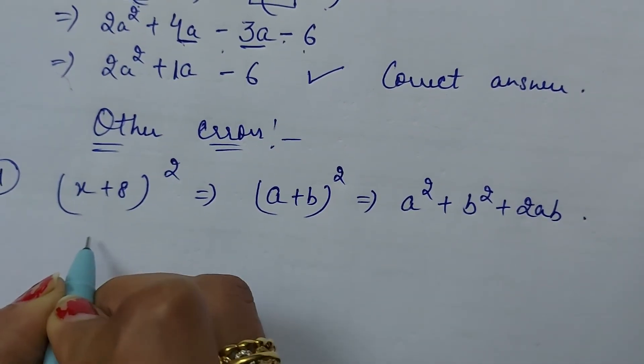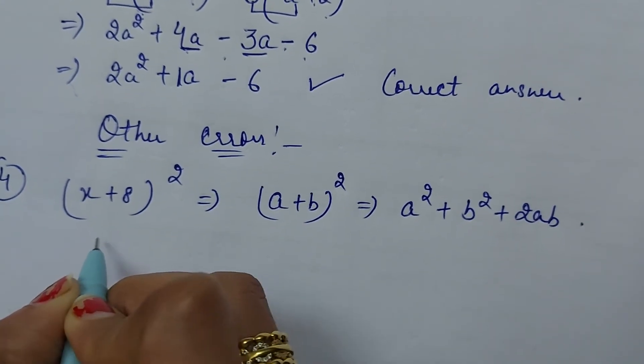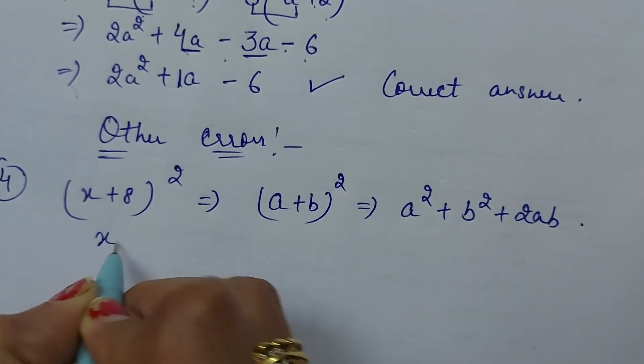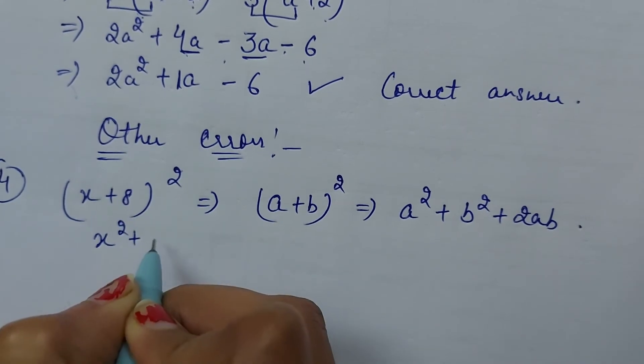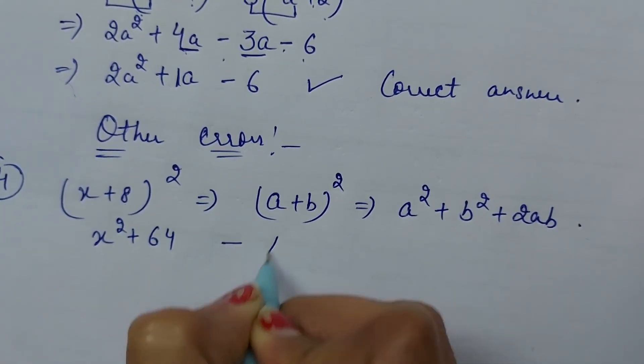Students, is mein errors kai tarha ki karte hain bachche. Yani ki, aise likhein: x square plus 8 ka square likhte 64 karte hain. It is wrong. Because it's identity.